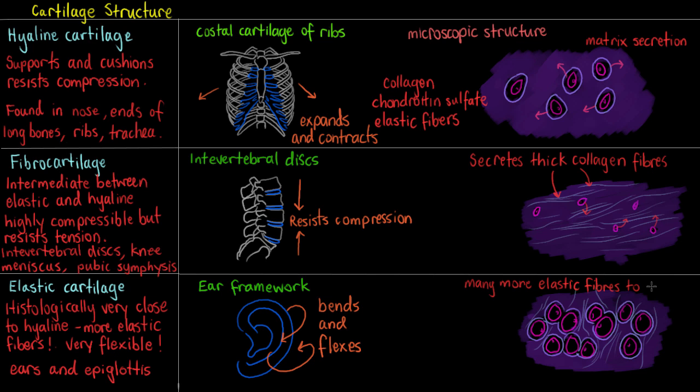So fundamentally that is how our three different types of cartilage in the body are different to each other are serving their different purposes and having different structures to reflect that purpose.